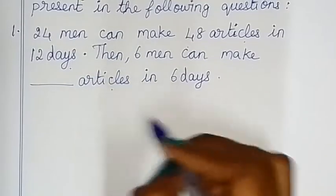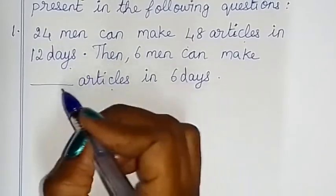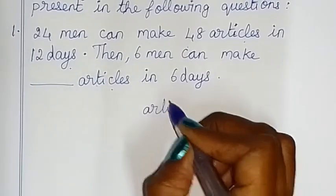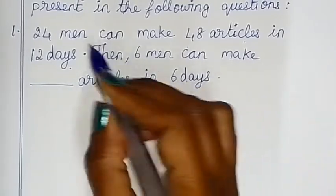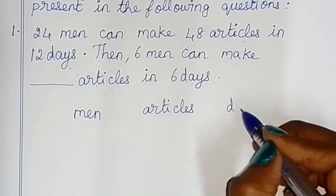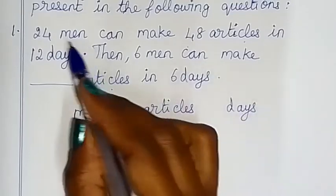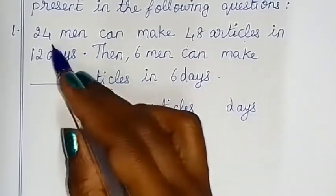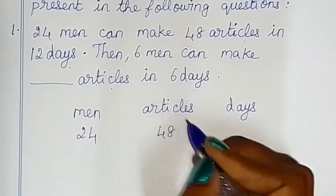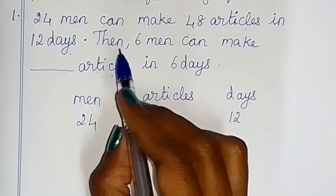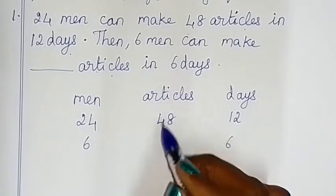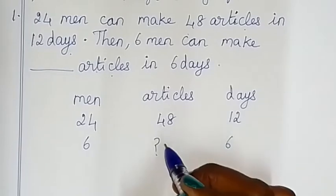Let's see the details. First column on the side: number of articles, number of men and days. 2nd row: 24 men can make 48 articles in 12 days. 6 men can make in 6 days — how many articles can make? This is x.